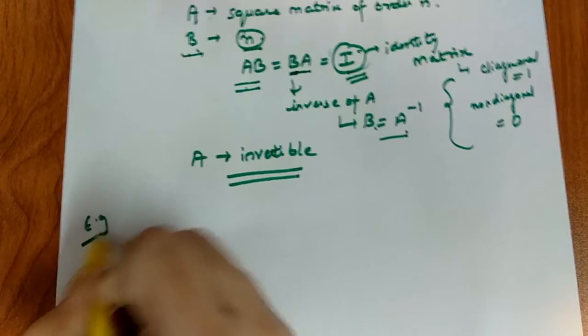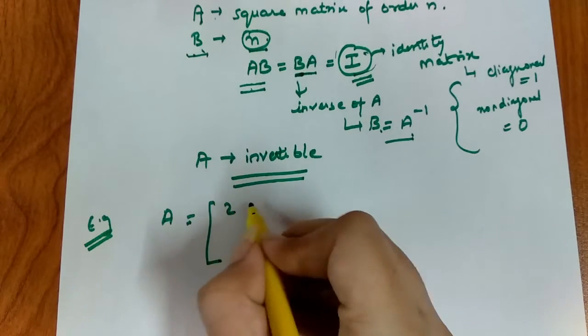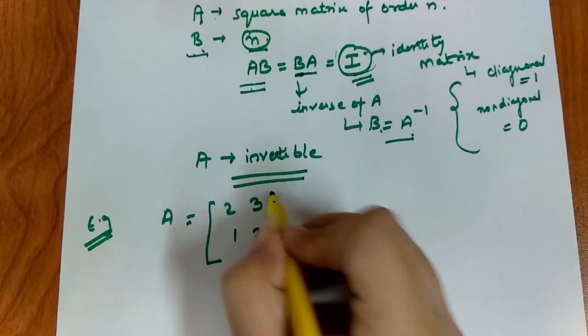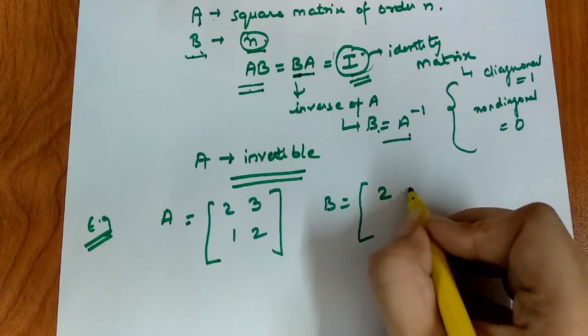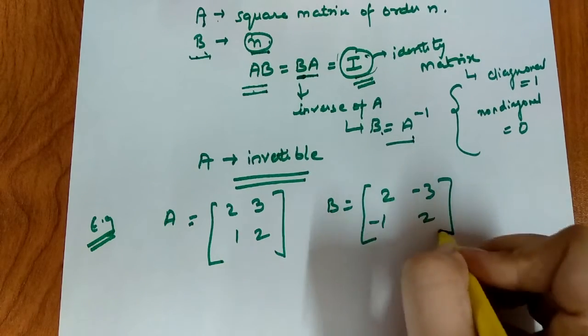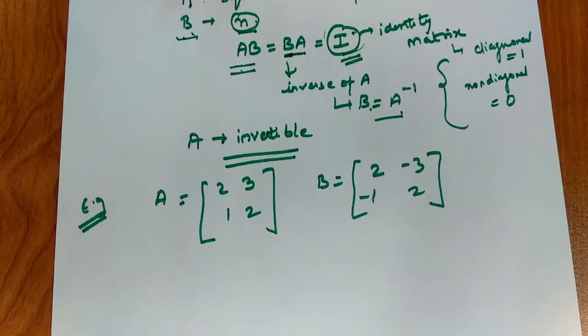Let's take an example. We have two matrices given: A is 2, 3, 1, 2, and B is 2, -3, -1, 2. Let's assume these two matrices are given. Now we have to check if these matrices fulfill the concept of invertible matrices, whether there is an inverse relationship between A and B.